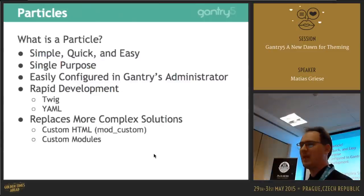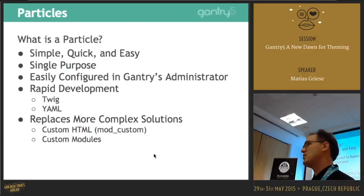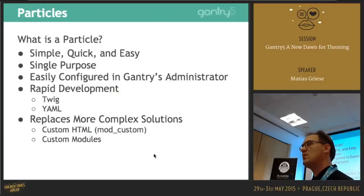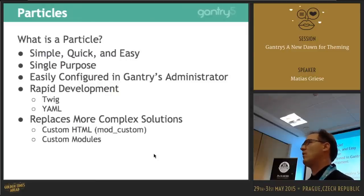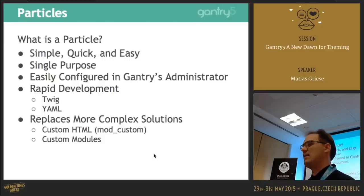Particles. In Gantry 4 we had an issue — we were using too many custom HTML modules. Everything was custom HTML and we advised users to use custom HTML if they wanted something custom. A Particle is something that replaces that. You can still have custom HTML, but that's not very end-user or customer friendly. If you have a customer and ask them to change HTML, they don't know how. Particles are very light modules — you can write one in 10 minutes, and it has an admin with nice fields, easy to use.